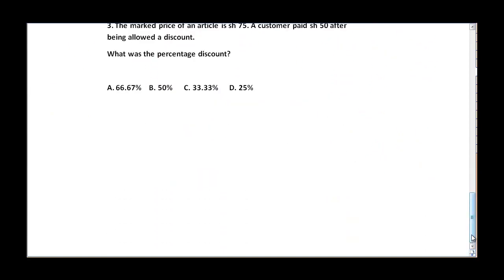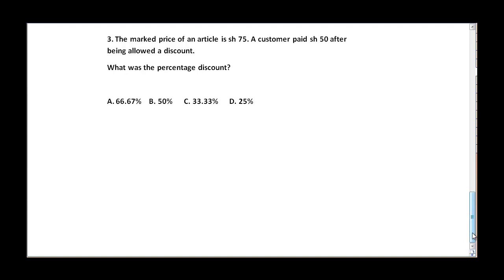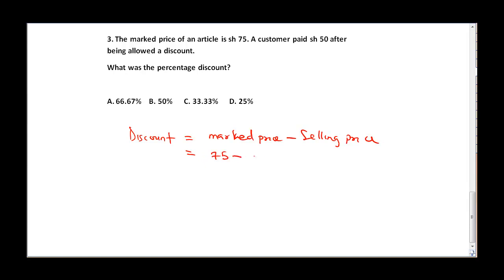The final question says: the marked price for an article is 75 shillings. A customer paid 50 shillings after being allowed a discount. What was the percentage discount? First, we find the discount: marked price minus selling price equals 75 minus 50, which gives a discount of 25 shillings.